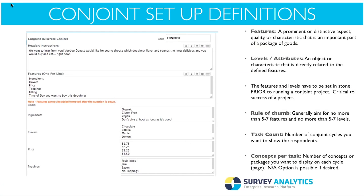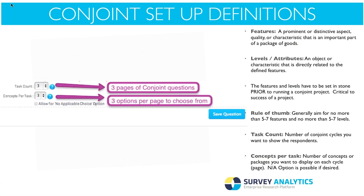You add headers and instructions, then your features — for donuts that's ingredients, flavor, pricing, toppings, fillings, etc. Below that are the levels: from ingredients you can break it down to organic, gluten-free, vegan, or 'I don't give a hoot as long as it's good.' Inside our system you can set up the task counts — here three pages of conjoint questions shown consecutively — and concepts per task, showing three options per page. You can also turn on a not-applicable choice if they don't like any of the options shown.